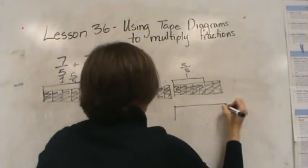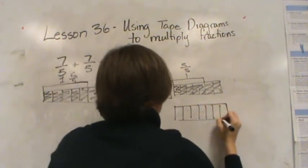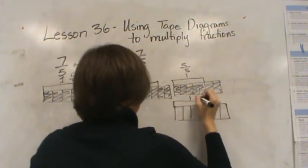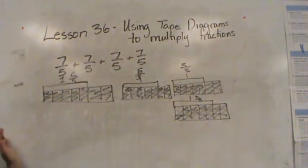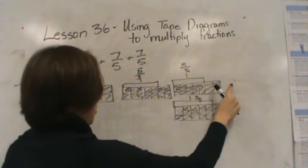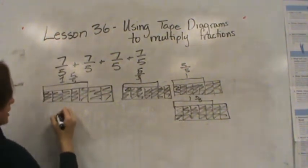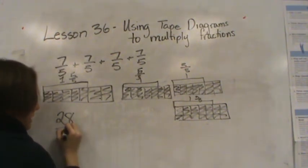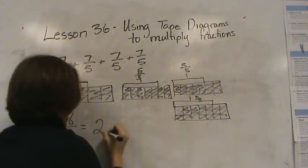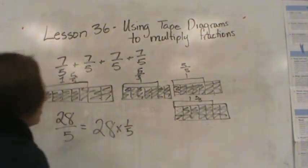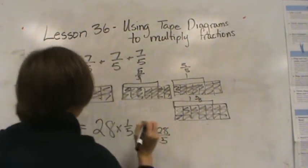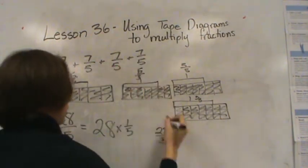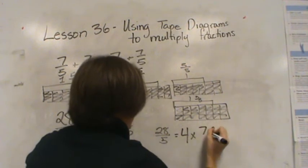I have 4 sets of 7/5. If I were to count all of these fifths together, I would have 7, 14, 21, 28. So, 28/5. That's the same as saying 28 times 1/5. It is also the same as saying I have 1, 2, 3, 4 groups of 7/5.